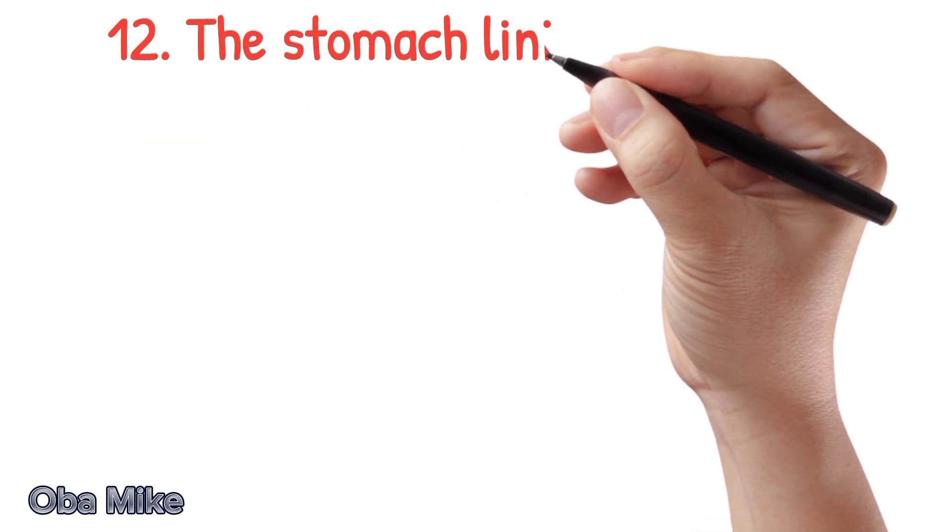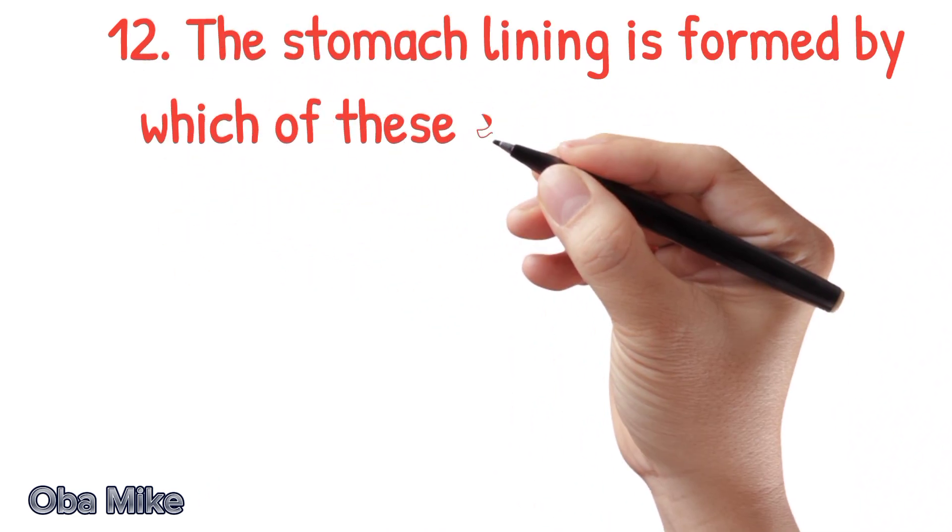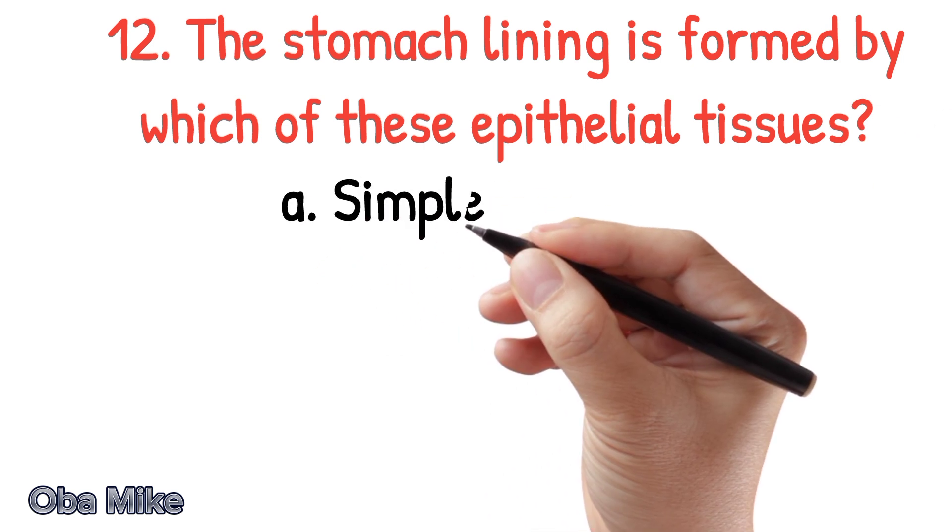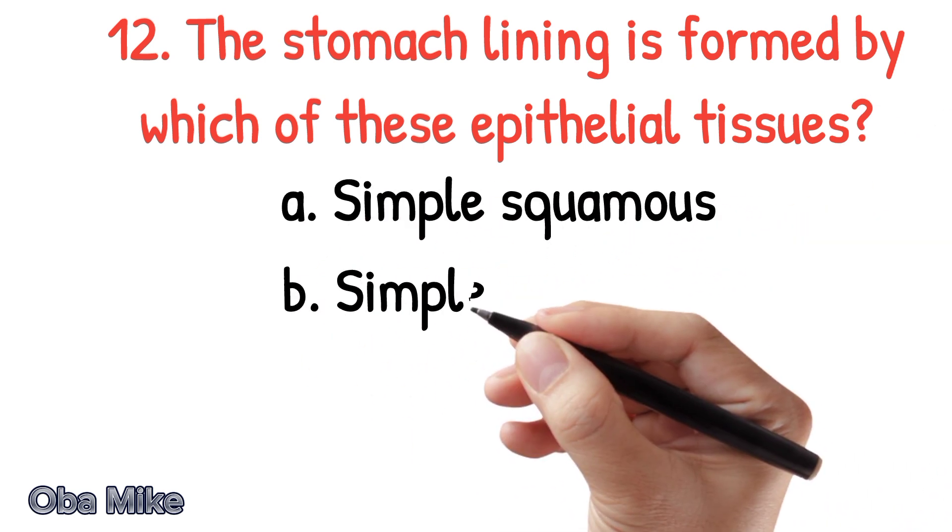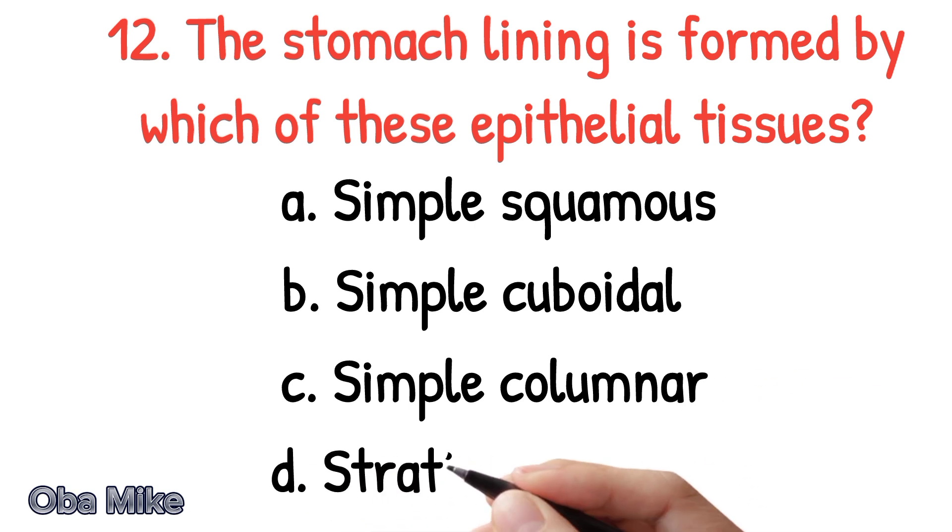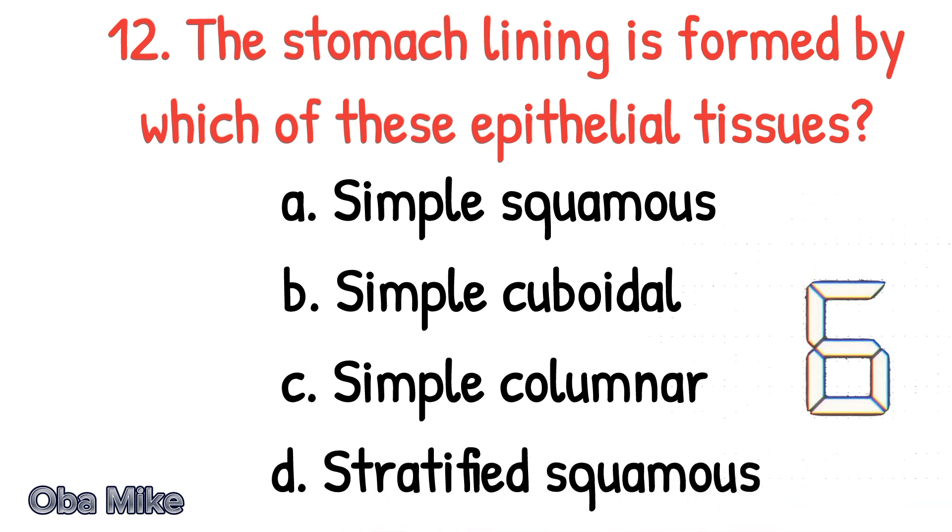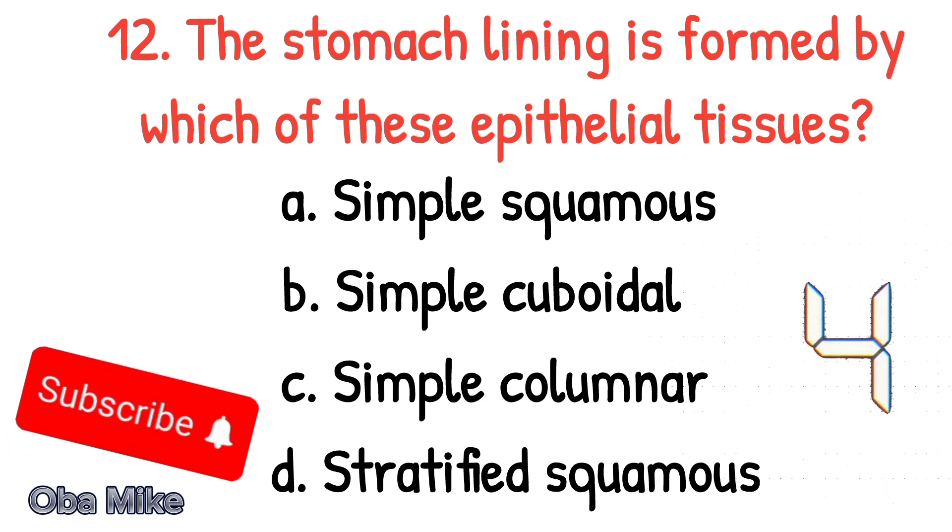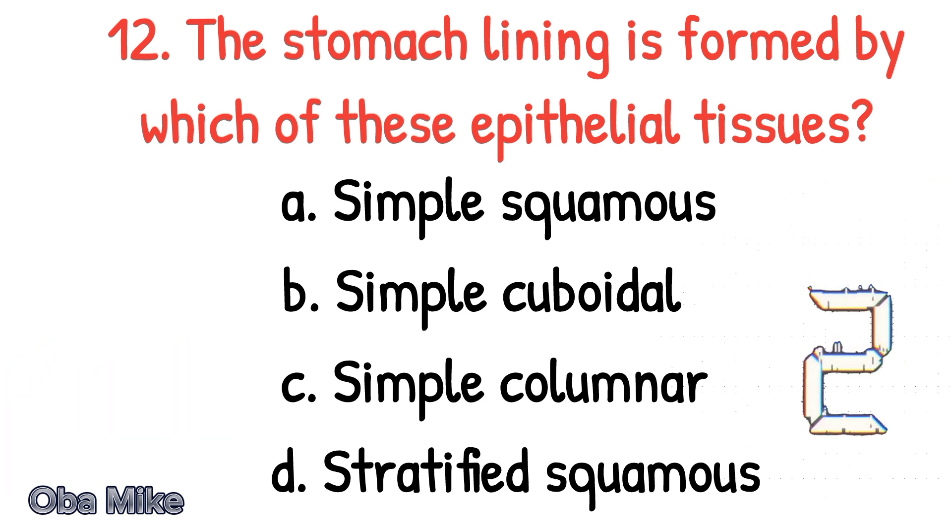The stomach lining is formed by which of these epithelial tissues? A. Simple squamous, B. Simple cuboidal, C. Simple columnar, D. Stratified squamous. The correct answer is C. Simple columnar.